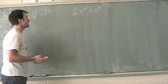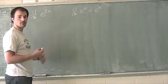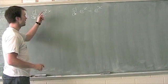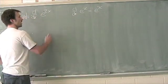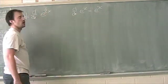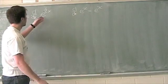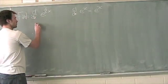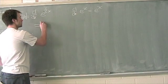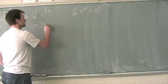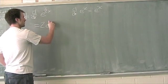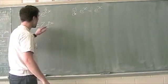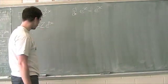e to the 2x is kind of the same thing as e to the x. The only difference here is we now have a constant k, which is equal to 2, in front. And I'm going to tell you right away, this is going to be 2 times e to the 2x. We're going to look at why that is right now.